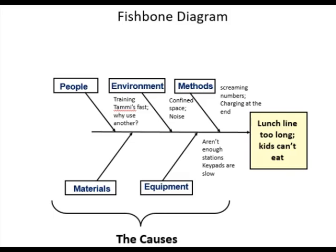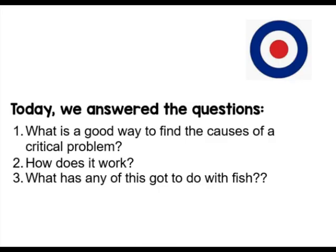The equipment — we simply don't have enough stations, which means we'd also need more manpower, and the keypads can be slow too. So all of these go together. Today we answered: what is a good way to find the causes of a critical problem? A fishbone diagram makes you look at categories of smaller problems that add up to a bigger problem. How does it work? It's sectioned off so you can see what's contributing. And what's it got to do with fish? It looks like a dead fish when it's done — thus the name!